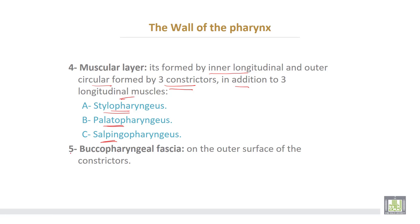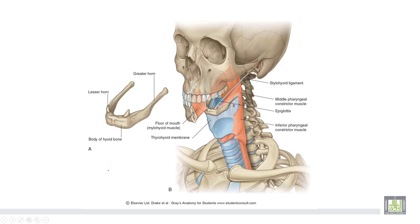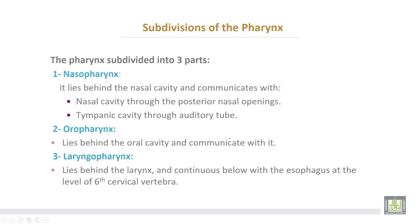The fifth layer is called the parapharyngeal fascia, which lies on the outer surface of the constrictors of the pharynx. The three constrictors are superior, middle, and inferior.